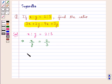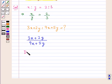We need to find the ratio 3x plus 2y is to 9x plus 5y. This ratio can be written as 3x plus 2y upon 9x plus 5y. Dividing the numerator and denominator